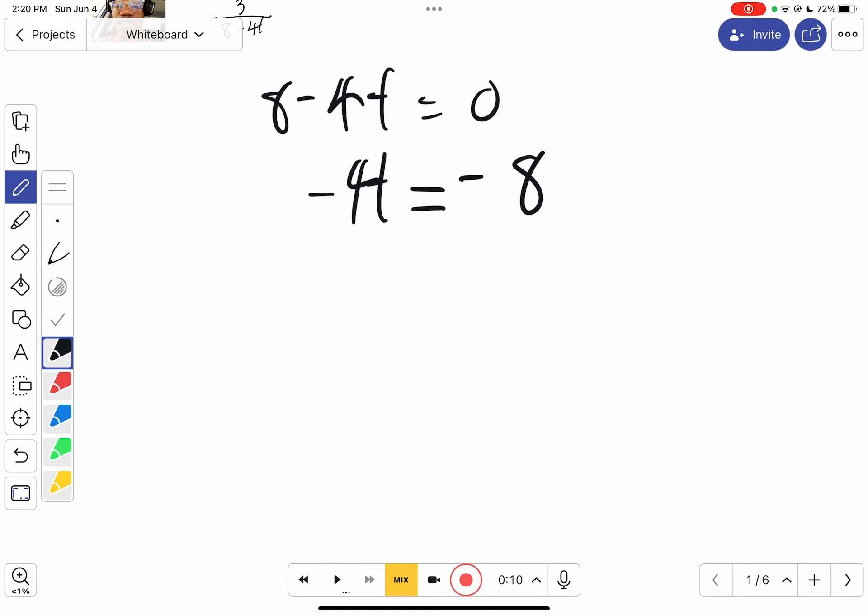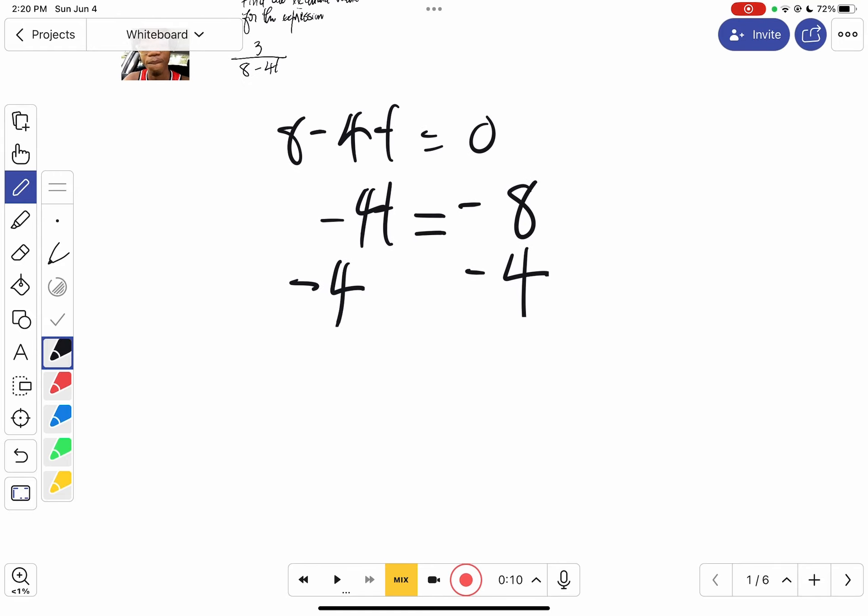In order to get t by itself, we'll need to divide by negative 4 so that we can cancel the negative 4 on top and the negative 4 at the bottom. We do the same thing for the other side to preserve the equation. The negative 4s cancel out, so we end up with t equals 2, because negative and negative make positive.